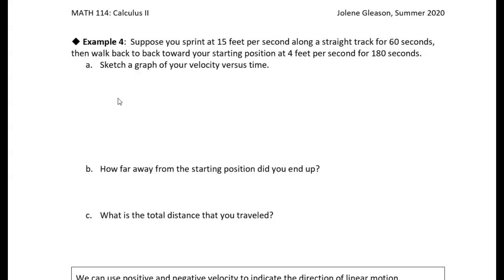Okay, so you've sprinted for 60 seconds at 15 feet per second, and then you stop and you turn around and you walk back toward your starting point, and you walk at 4 feet per second for 180 seconds, so three minutes. And we're asked, first of all, just to sketch a graph of this velocity versus time.